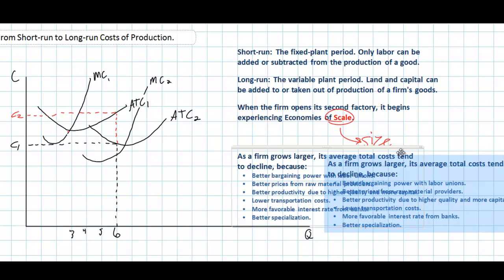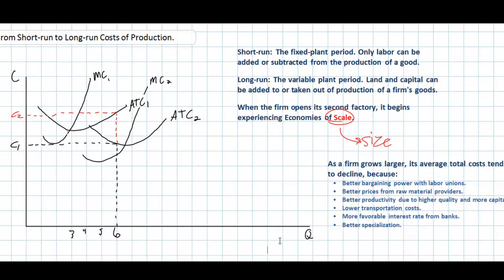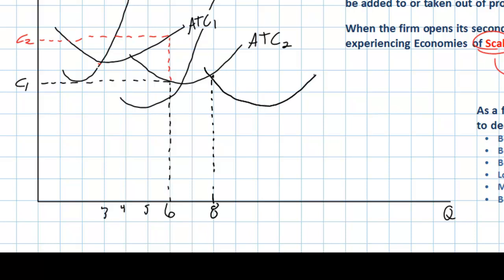Because of these factors, a firm in the long run, as it opens additional factories and adds capital to production, tends to experience lower and lower average total costs. Let's assume that after producing its eighth airplane, this firm decides its costs are starting to rise too much again, so it opens another factory. Economies of scale lead to even lower average total costs, and with a third factory, this firm could produce at a cost lower than what it achieved with its second factory. Costs continue to fall as the firm opens additional plants.